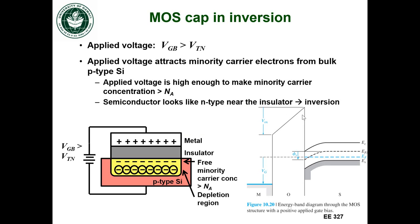I'm going to keep increasing my voltage past the threshold voltage, and that will put me into inversion. In this case I have so much positive charge at the metal interface that I'm repelling away all the holes from the semiconductor surface, so I've created that depletion region.